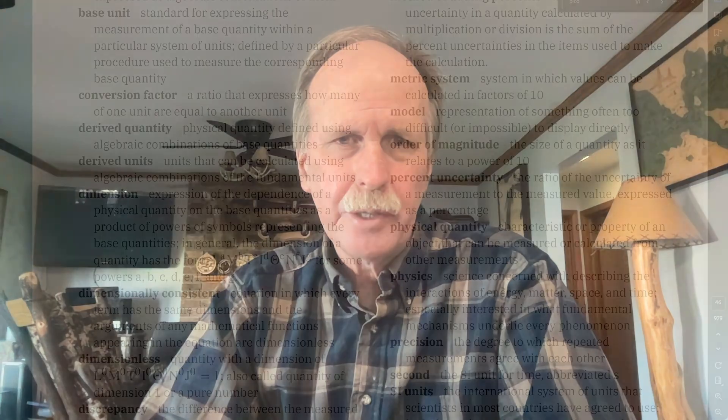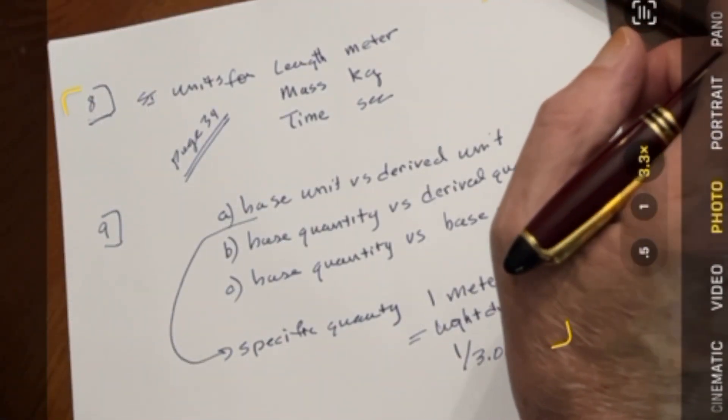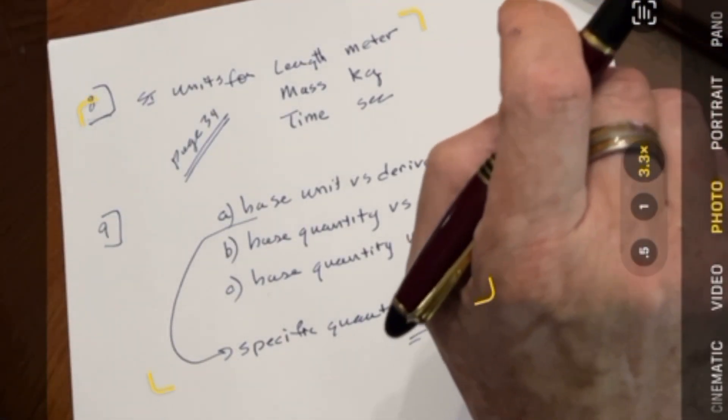Let's go on to the next question. Question number 9 is basically a definitions question. Do you understand the difference between a base unit and a derived unit? The answer for that is, unsurprisingly, found on page 34, the page of definitions.